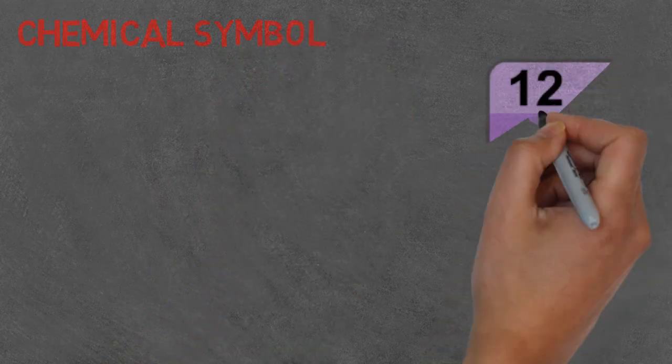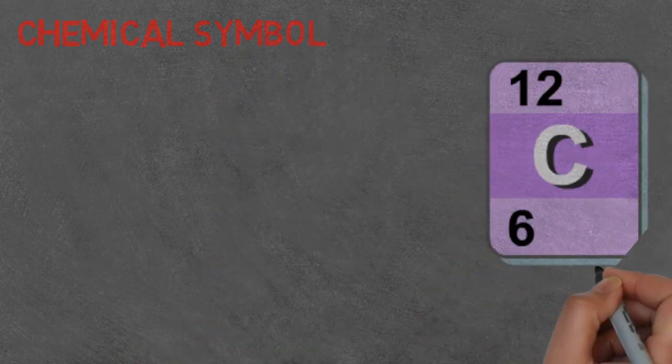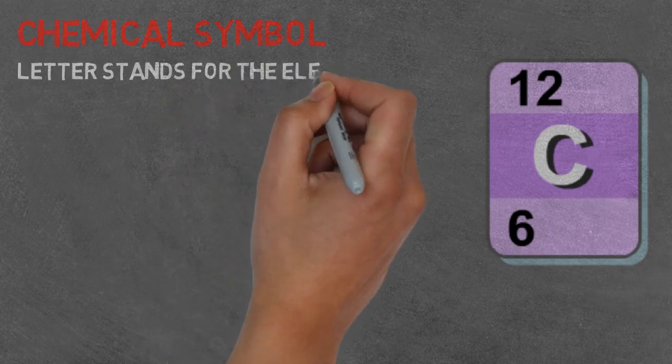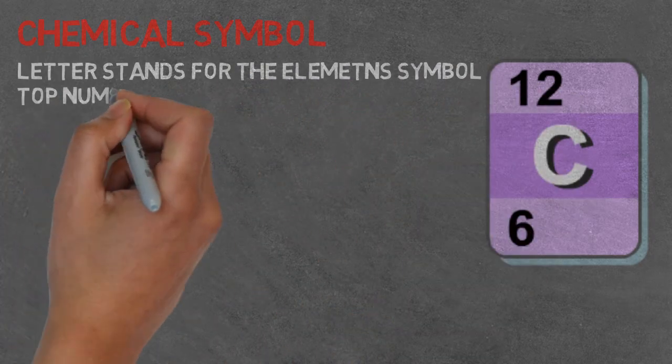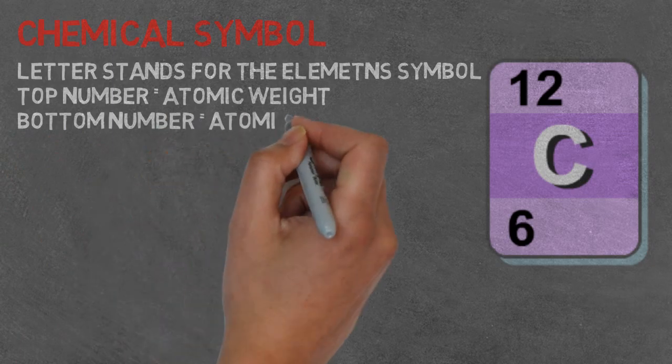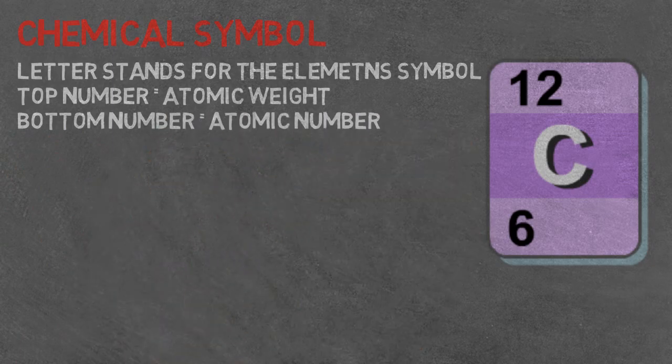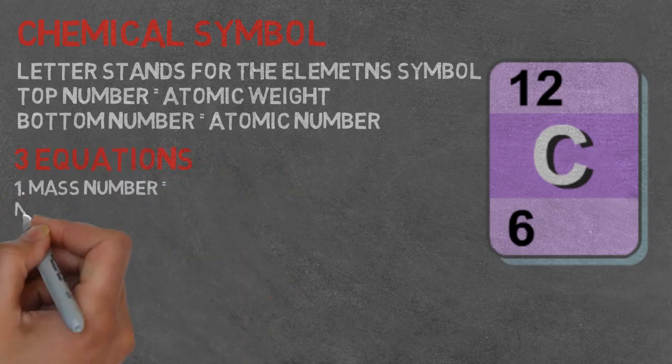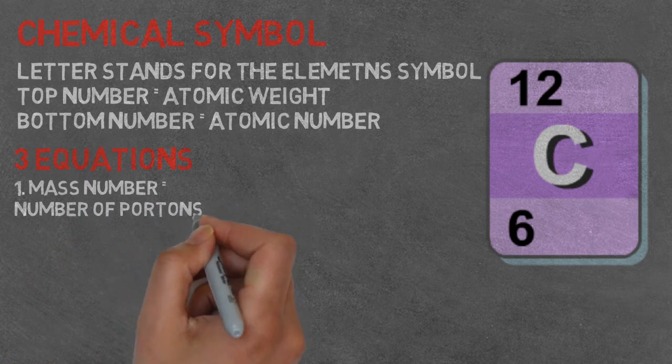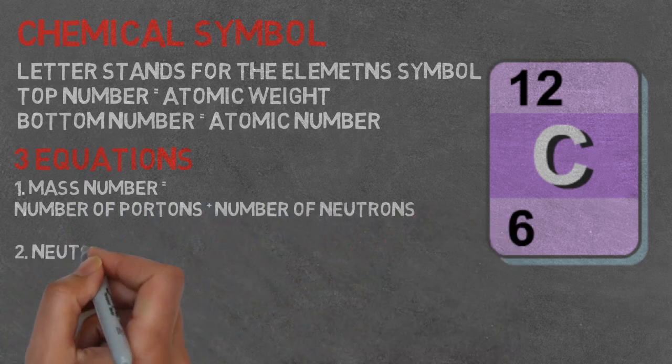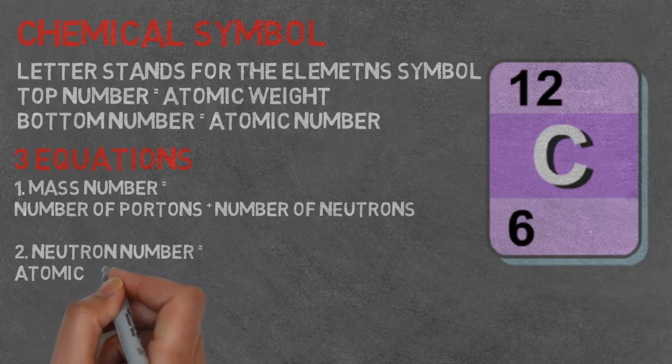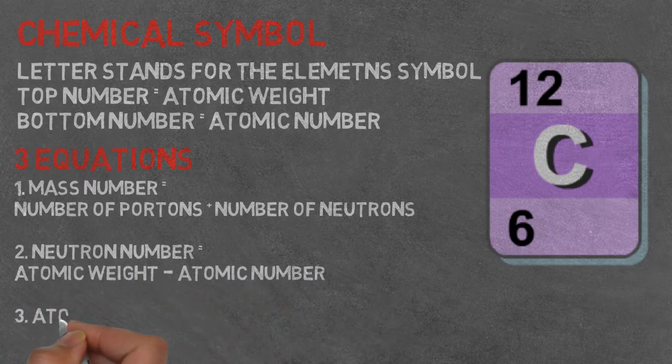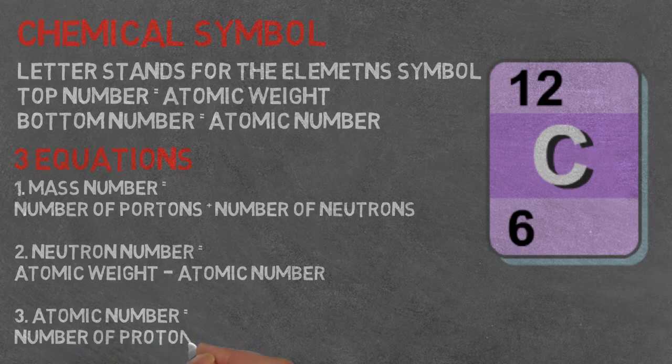When we're looking at the chemical symbol for an element, the letter is the element's symbol and is how it's represented in a chemical equation. The top number is the element's atomic weight and the bottom number is the element's atomic number. Three equations that we use to help us calculate subatomic particles: mass number equals number of protons plus number of neutrons. Number of neutrons equals mass number take atomic number. An atomic number is the number of protons. And remember, an atom always has the same amount of protons and electrons in the atom.